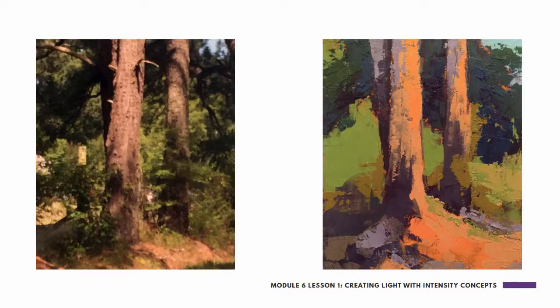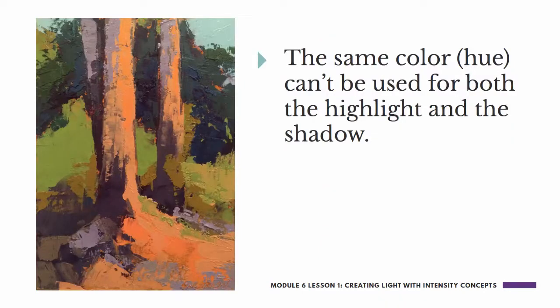As you paint, make sure that you exaggerate those contrasts just a little bit so that you more clearly create that illumination. Remember that people are not looking at paintings from the same distance as you are when you're painting it, so stand back so you can see that you're creating the same degree of contrast. And remember, as we talked about in the last module, the same color or hue can't be used for both the highlight and the shadow — use your color wheel to move up in value to an inherently lighter color for the highlight and down in value to an inherently darker color for the shadow.